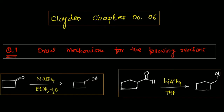Hello and welcome everyone. This question is from organic chemistry, Chapter 6, on nucleophilic addition reactions. We need to draw the mechanism for the following reactions. In the first box, cyclobutanone reacts with sodium borohydride in combination with ethanol and water to give the product cyclobutanol — from cyclobutanone to cyclobutanol.